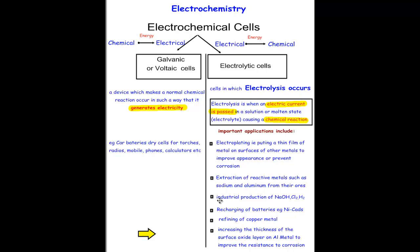Other processes where it's useful: industrial production of sodium hydroxide, chlorine, hydrogen, and also recharging of batteries. On this side, they're galvanic cells, which are batteries. When they run out of electricity, you can just recharge them by passing electricity through them in the opposite direction.